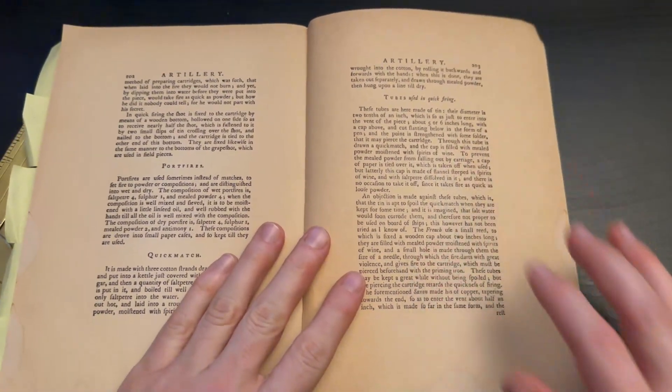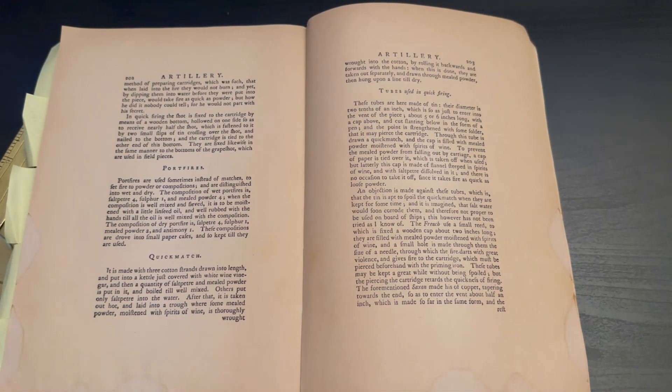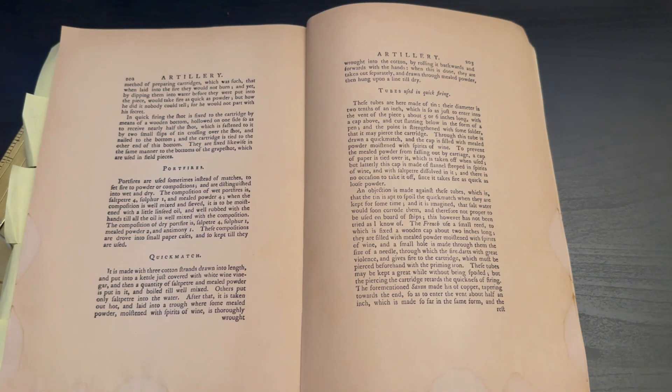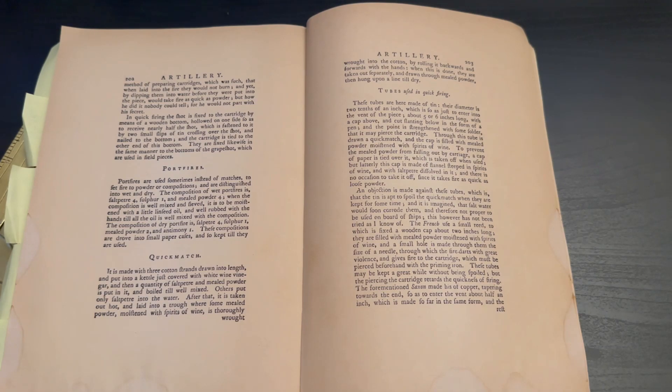On page 203, Mueller writes: Tubes used in quick firing. These tubes are here made of tin. Their diameter is two-tenths of an inch, which is so as to just enter into the vent of the piece, about five or six inches long, with a cap above and cut slanting below in the form of a pen, and the point is strengthened with some solder so that it may pierce the cartridge. Through this tube is drawn in quick match, and the cap is filled with mealed powder moistened with the spirits of wine. To prevent the mealed powder from falling out by carriage, a cap of paper is tied over it, which is taken off when used.